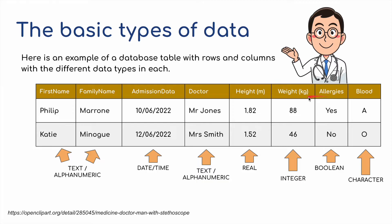Whether the patient has got allergies or not — yes they have, no they haven't — it can't be both, it's one or the other, so that's a boolean field. And then a single character for blood type in this database. We've got an A and an O for different types — that's a character field.